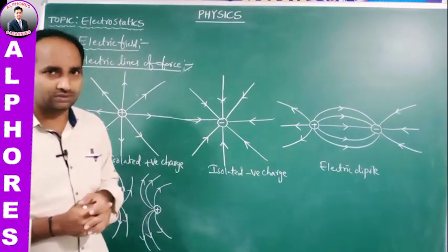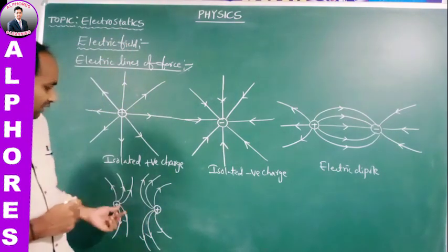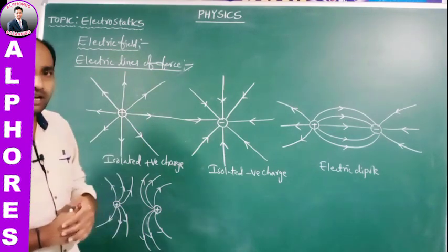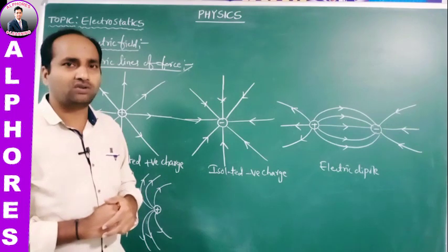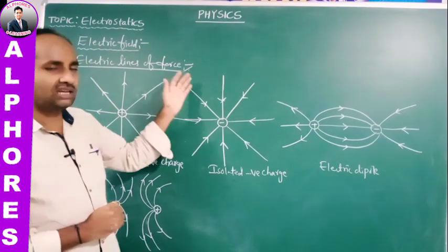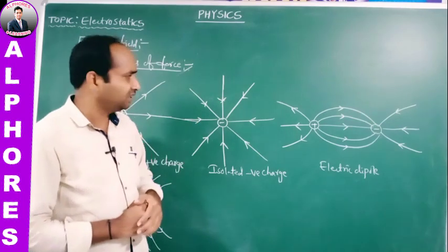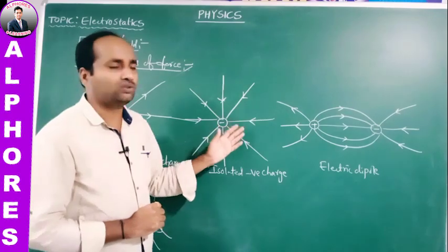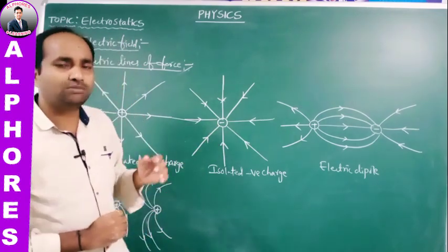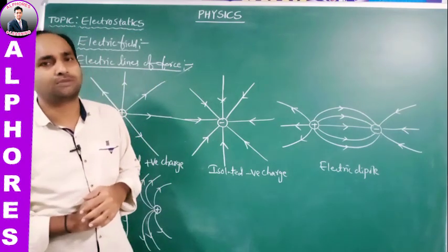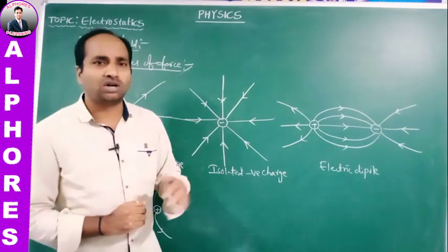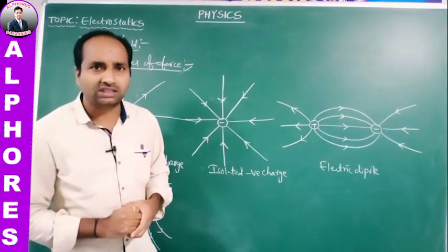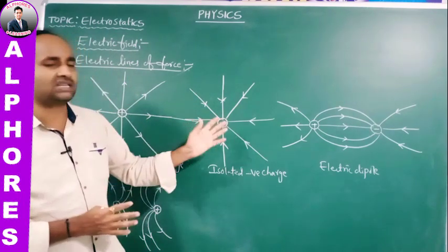In the case of two point charges, the direction of electric lines of force follows accordingly. The region where electric field lines are crowded has a stronger field; where they are sparse, the field is weaker. No two electric lines of force intersect each other — if they did, the field would have two directions at that point, which is not possible. Electric lines of force are imaginary lines with no physical evidence, unlike magnetic lines of force which can be proven.